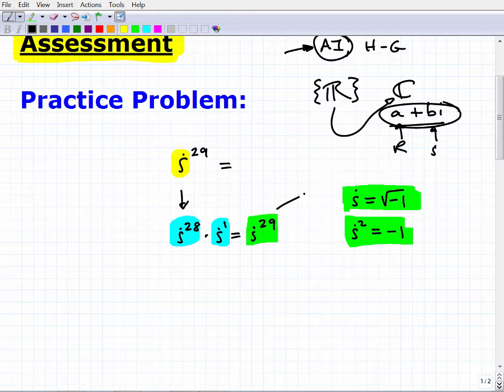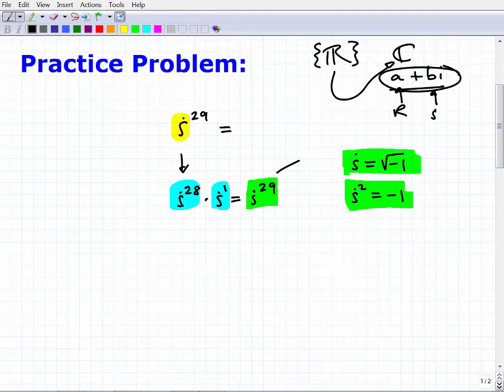So this here, i to the 28th times i to the first is equivalent to i to the 29th. Okay. So if I could figure this out, then I could figure out what i to the 29th is. So we're like, oh, okay. Maybe you kind of see where I'm going. Well, the key is how do we figure out this i to the 28th? Now, we don't want to multiply i by itself 28 times or 29 times. That's just too long, right?